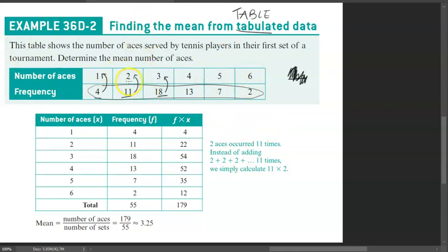So in other words, there were one, two, three, four aces plus another 11 twos. So two plus two plus two 11 times. Now this is going to be quite time consuming. So instead we're going to just do F times X or a frequency amount times the number of aces. So we've got four aces. So these four people contributed four aces.